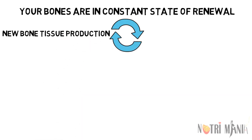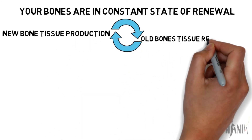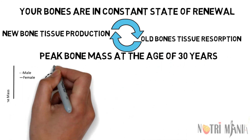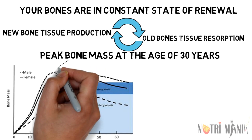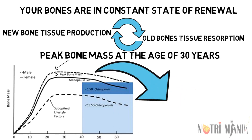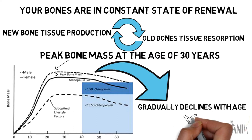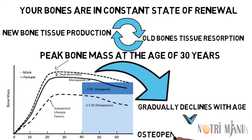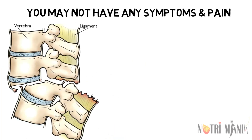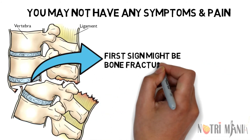After the early twenties, this process slows, and most people reach their peak bone mass by age 30. How likely you are to develop osteoporosis depends partly on how much bone mass you attained in your youth. The higher your peak bone mass, the more bone you have in reserve and the less likely you are to develop osteoporosis as you age. The first sign might be a bone fracture, as you may not have any symptoms or pain initially.